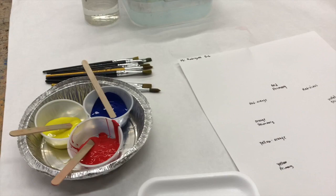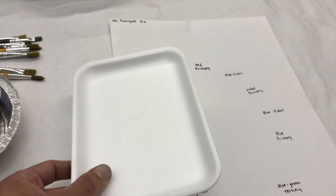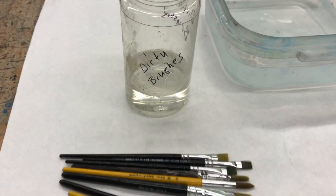I have already labeled my color wheel ahead of time. This is good because it helps us to remember where to put the colors. My palette, aka a breakfast tray, my water to wash my brushes and this water is for dirty brushes and my brushes. Also a paper towel.